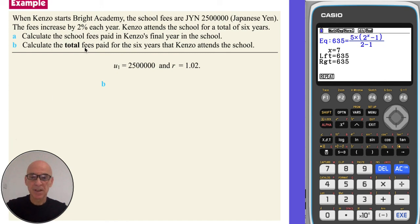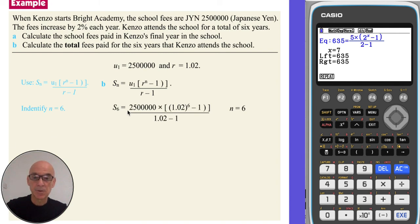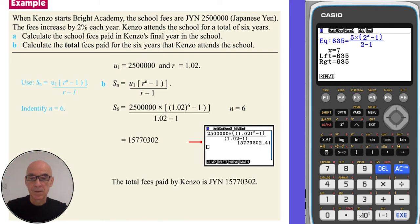In part B, we're asked to calculate the total fees paid for the 6 years at the school, which is the sum of each of the 6 years fees. So if we write down our formula for Sn. So the total fees paid by Kenzo over those 6 years is 15,770,302 yen.